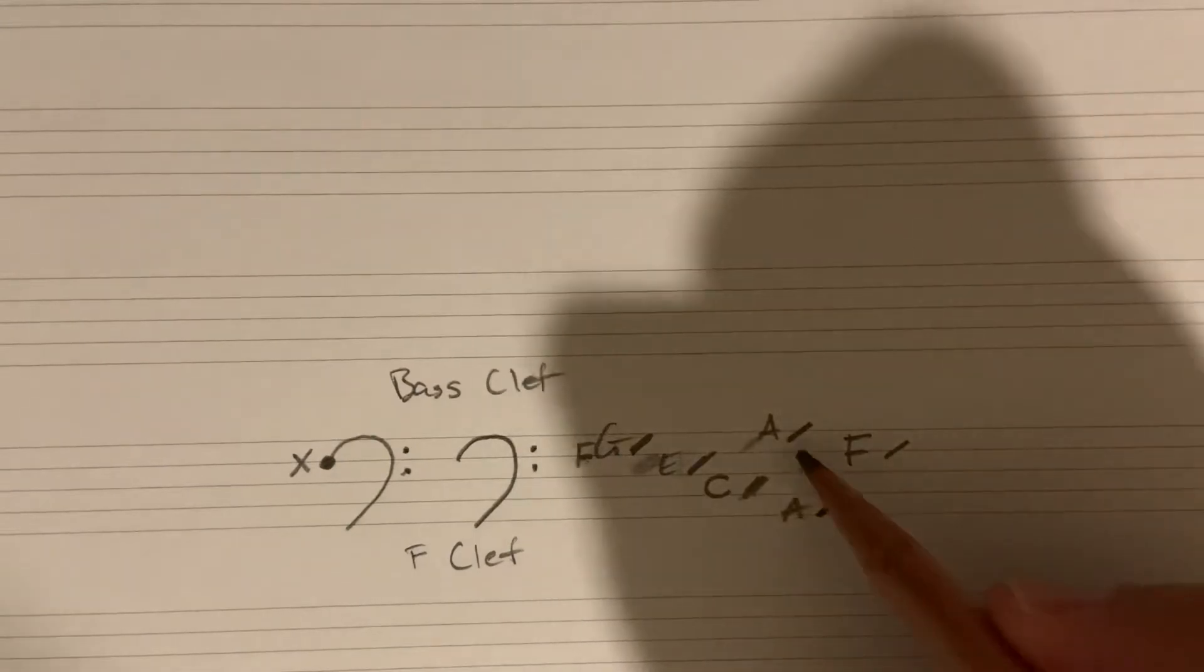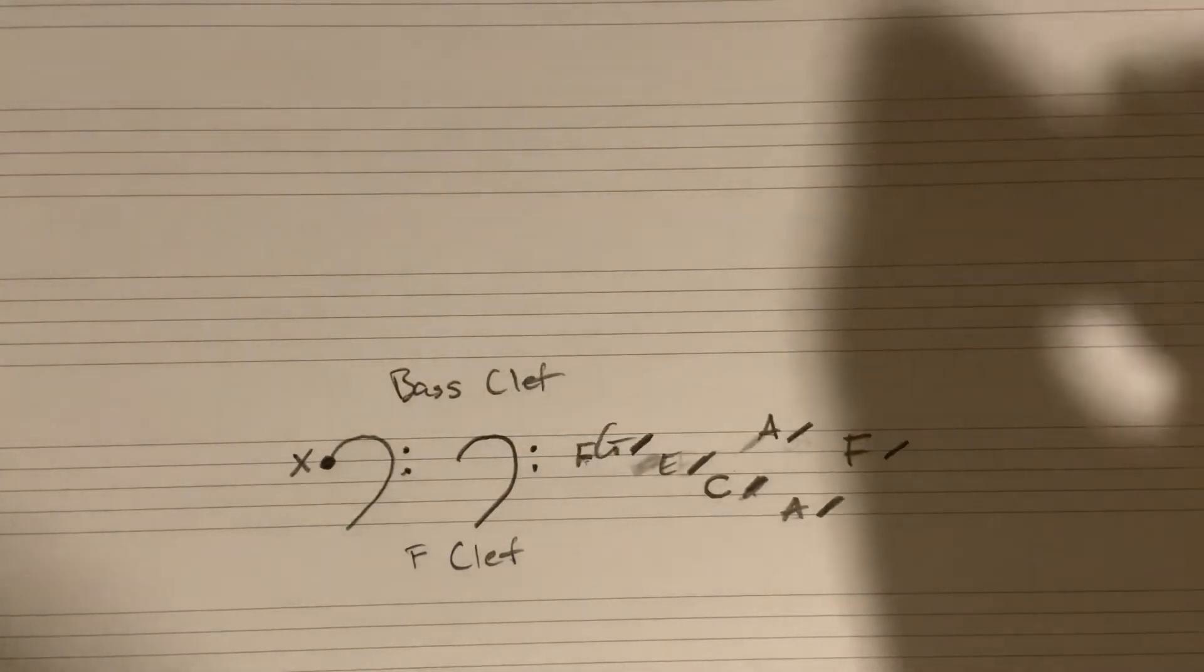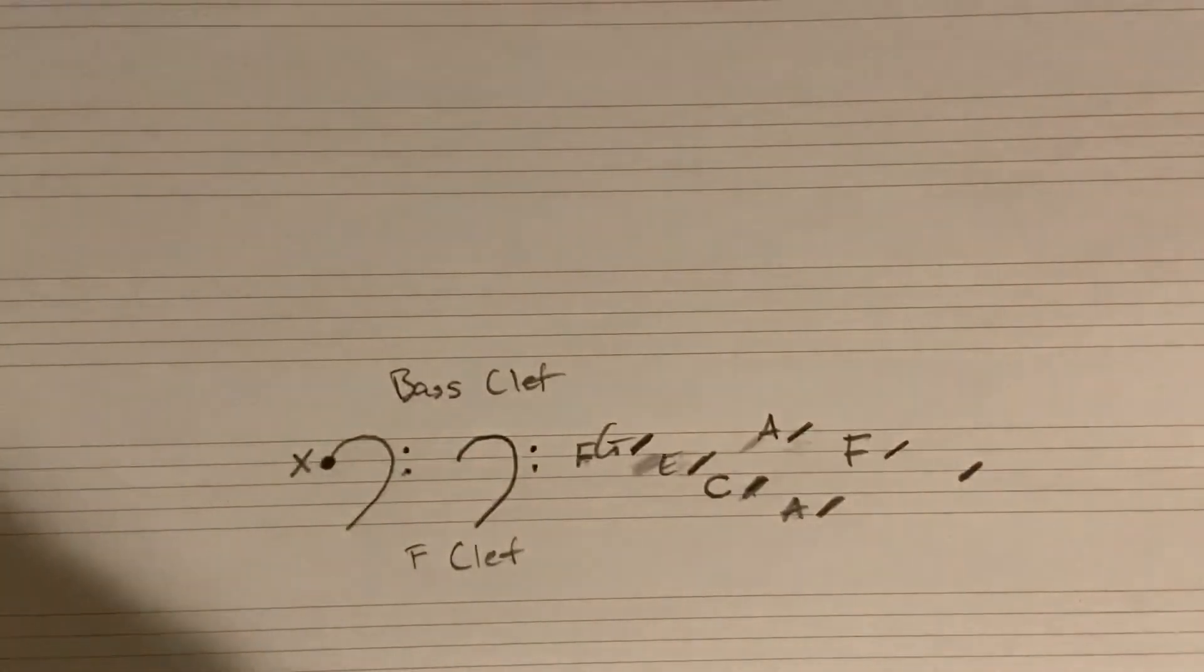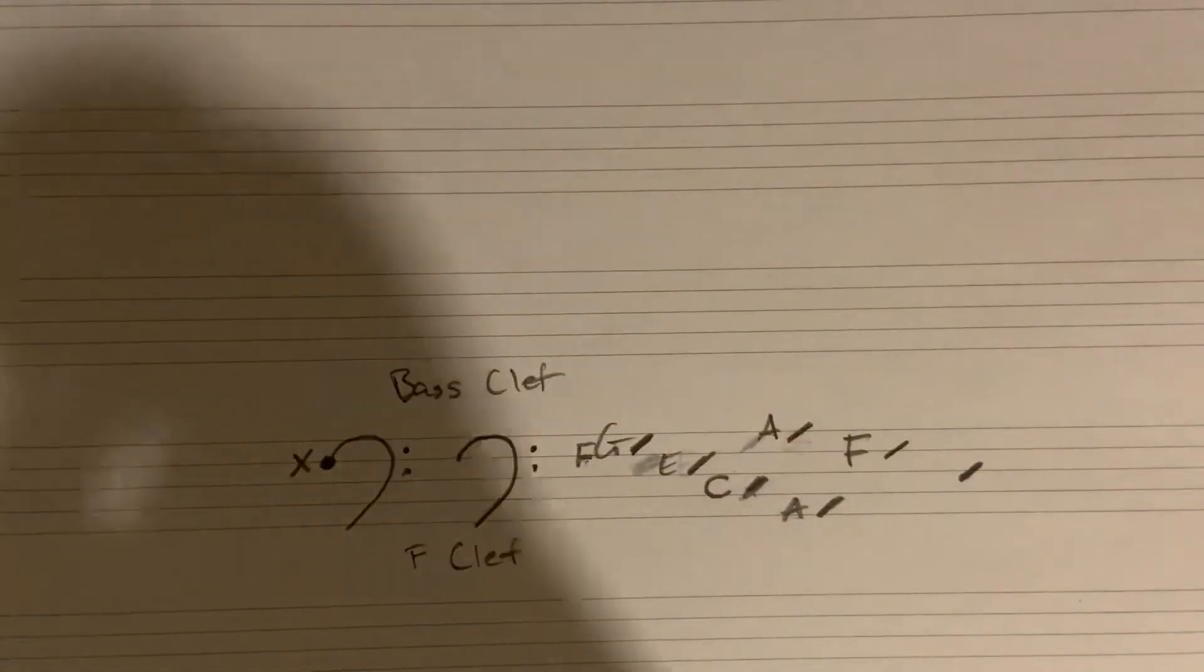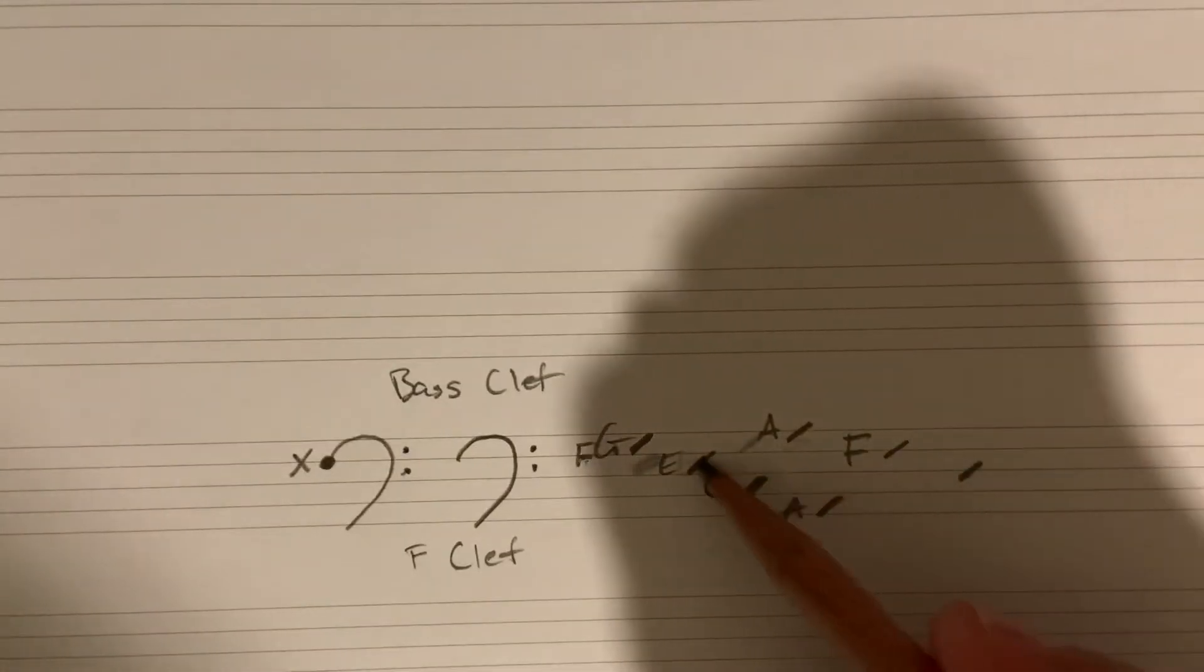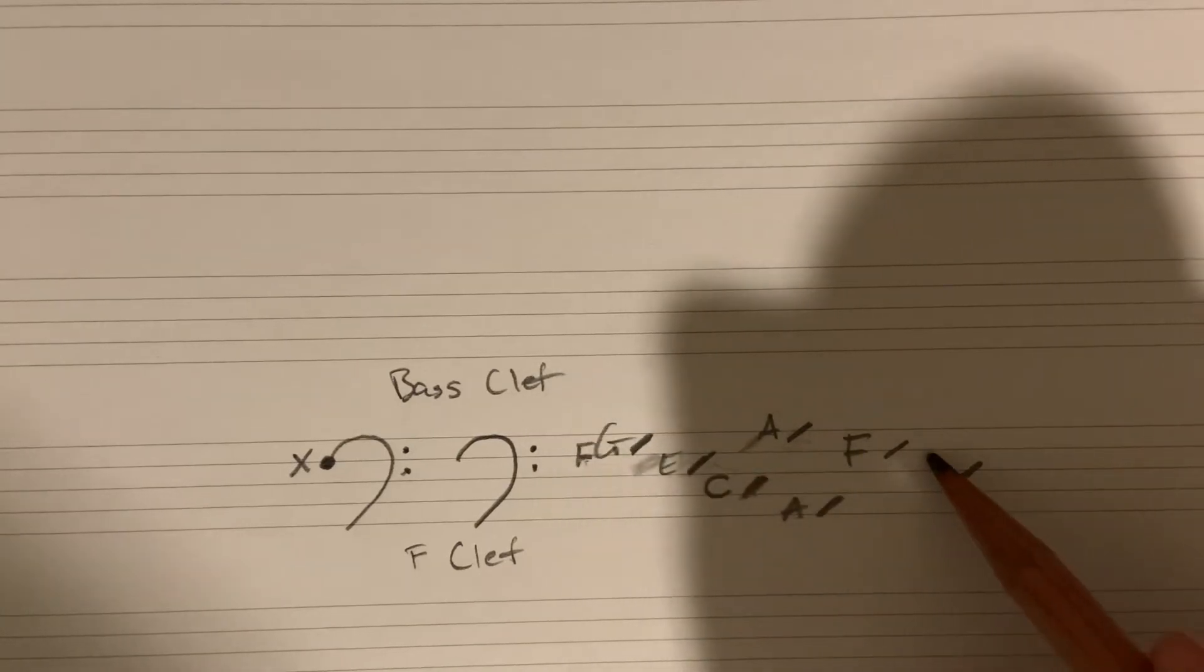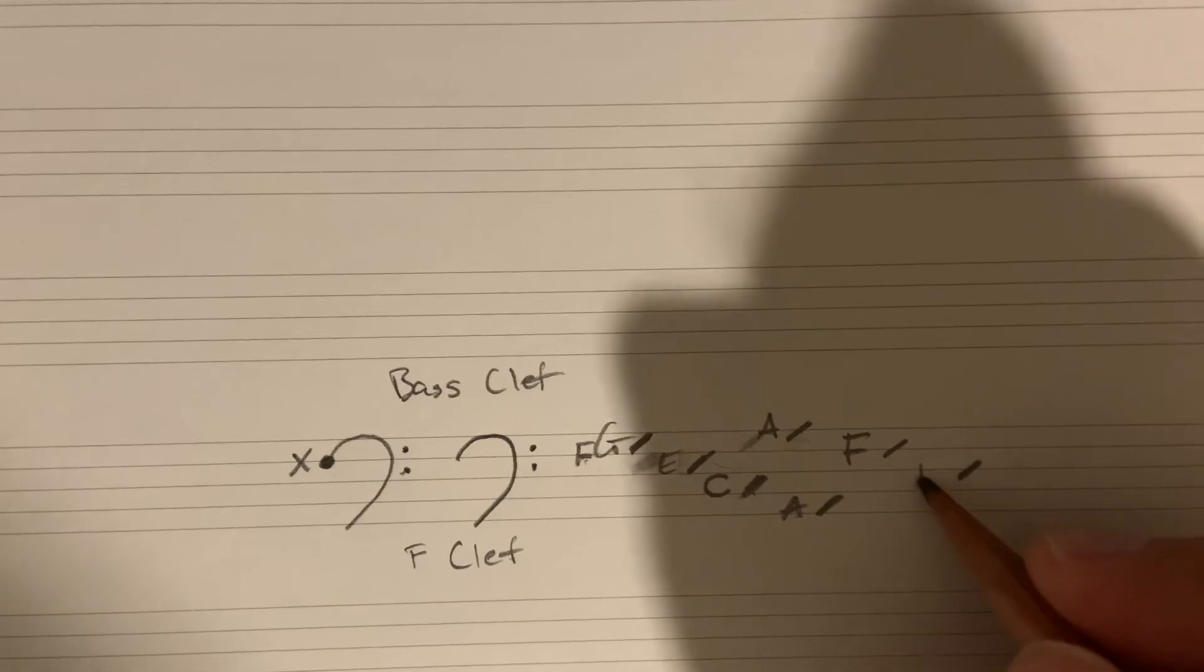So there's our very top space and our second-to-top space. Now we want to figure out this middle space right here. So again, let's go through our alphabet, A, B, C, D, E. That would give us this space right here. And we have that written in already. And then before E comes D.